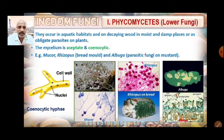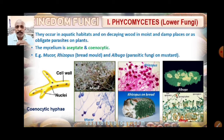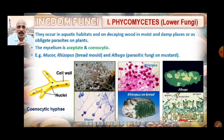Aseptate and coenocytic — these two terms are related. If the septum is absent, it is coenocytic. The mycelium here in the Phycomycetes is aseptate, and therefore it is coenocytic. Coenocytic means an aseptate hypha that is multinucleate — containing many nuclei.